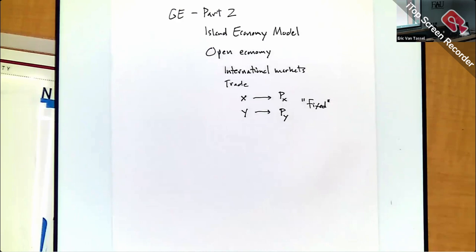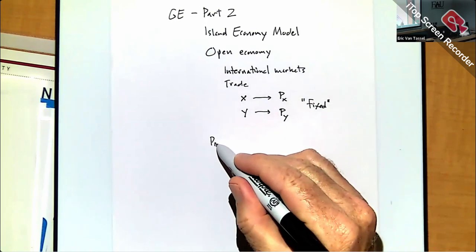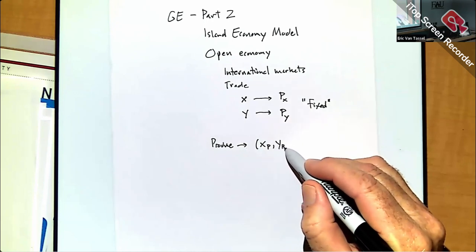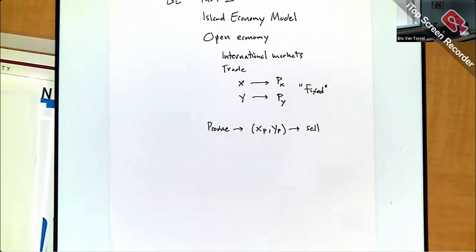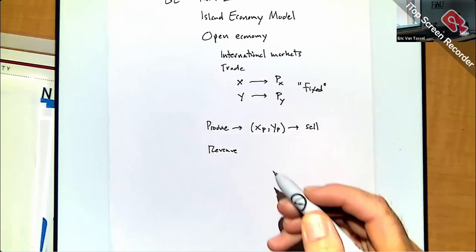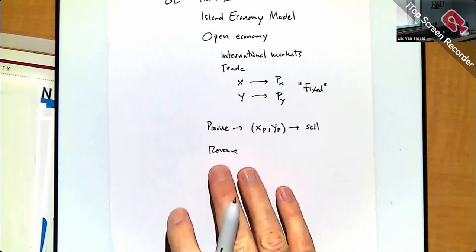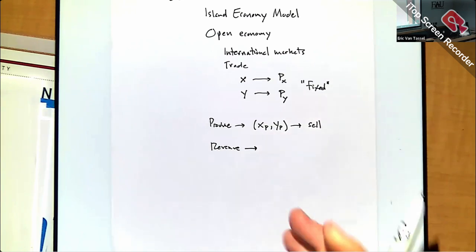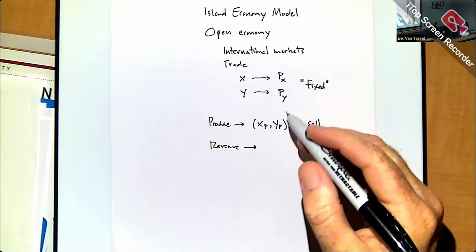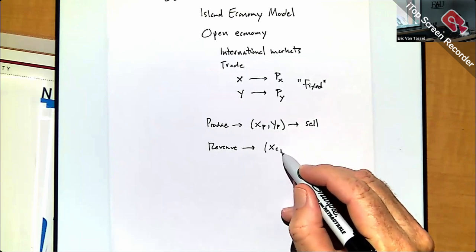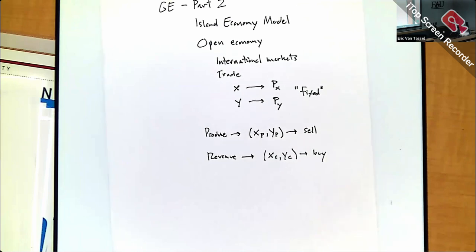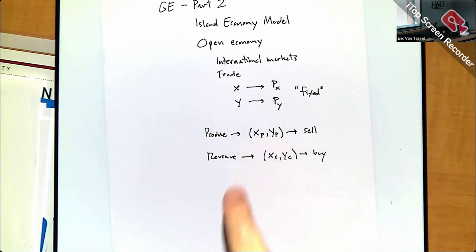The country can produce products X and Y, sell them in the international markets, and that generates some revenue — hard currency, dollars — that I can then use to return to the international markets. Given the revenue generated from exporting, I can pick out a consumption basket XC, YC. Access to international markets doesn't force me to consume exactly what I produce.